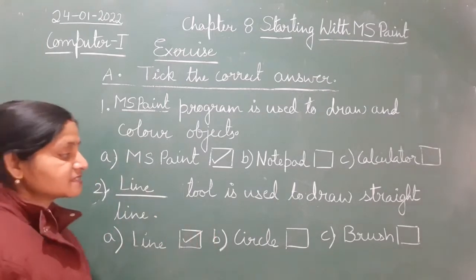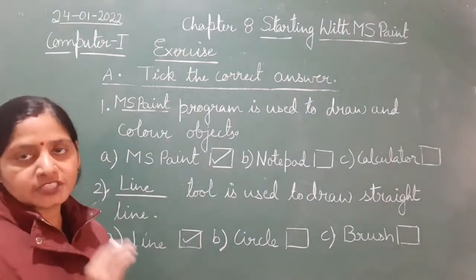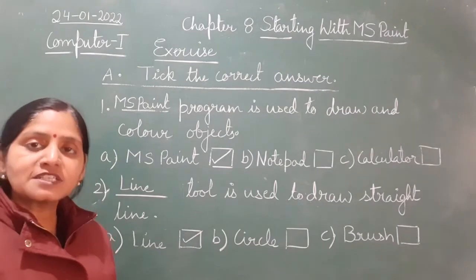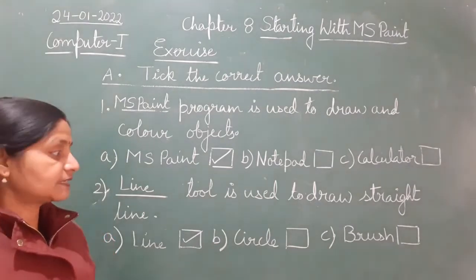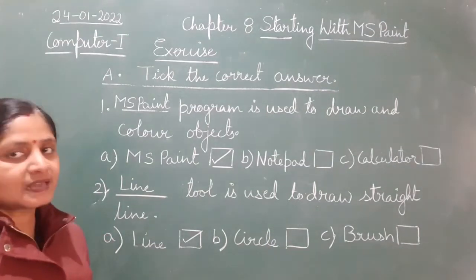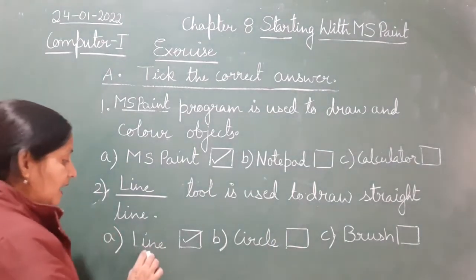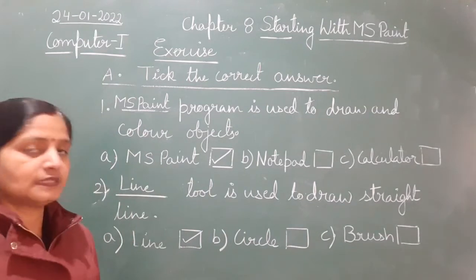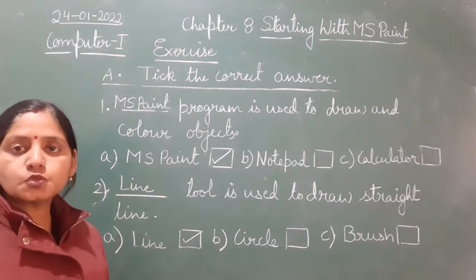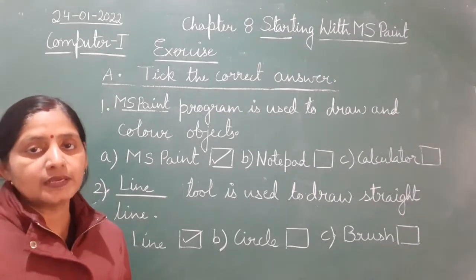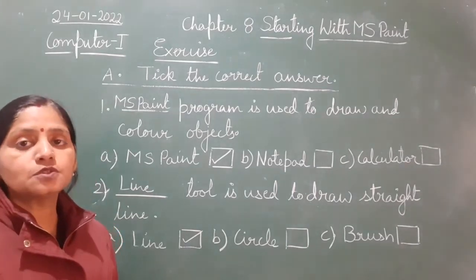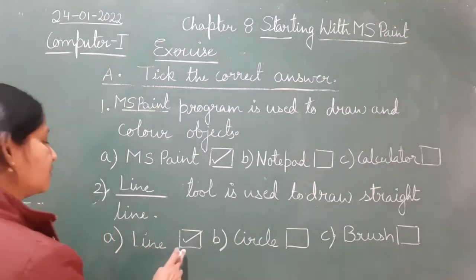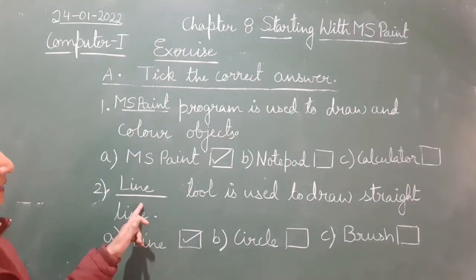Circle means a round shape. Brush is also a tool which is used for coloring or drawing. But to draw a straight line, we use the line tool — not circle and not brush. There are several tools: one for circle, one for line, one for square, one for rectangle, and we use each to make different drawings. So if we want to draw a straight line, we use the line tool.